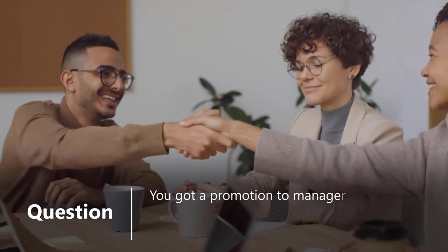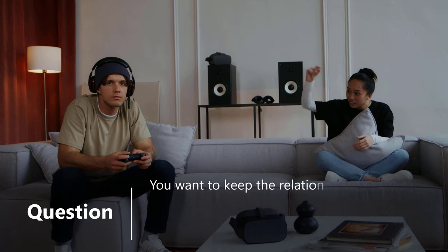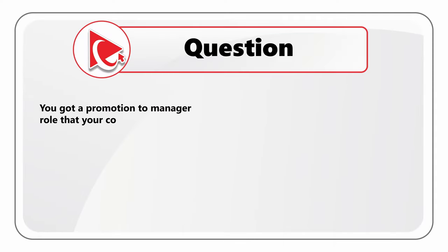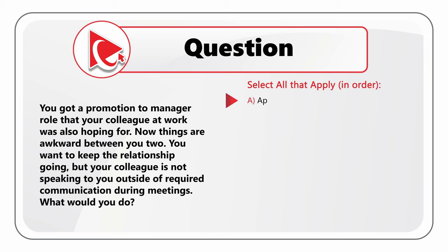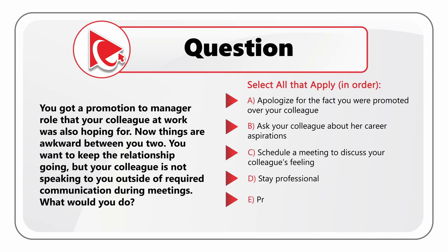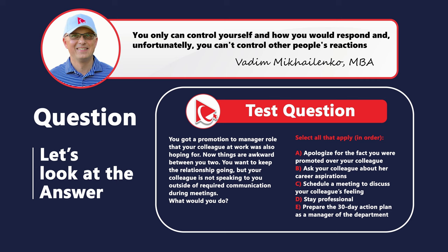You got promoted to a manager role that your colleague was also hoping for, and things are now awkward between you. Your colleague is not speaking to you outside required communications during team meetings. You have five choices — select all that apply in order. A: Apologize for being promoted over your colleague. B: Ask your colleague about her career aspirations. C: Schedule a meeting to discuss your colleague's feelings. D: Stay professional. E: Prepare a 30-day action plan as manager of the department.